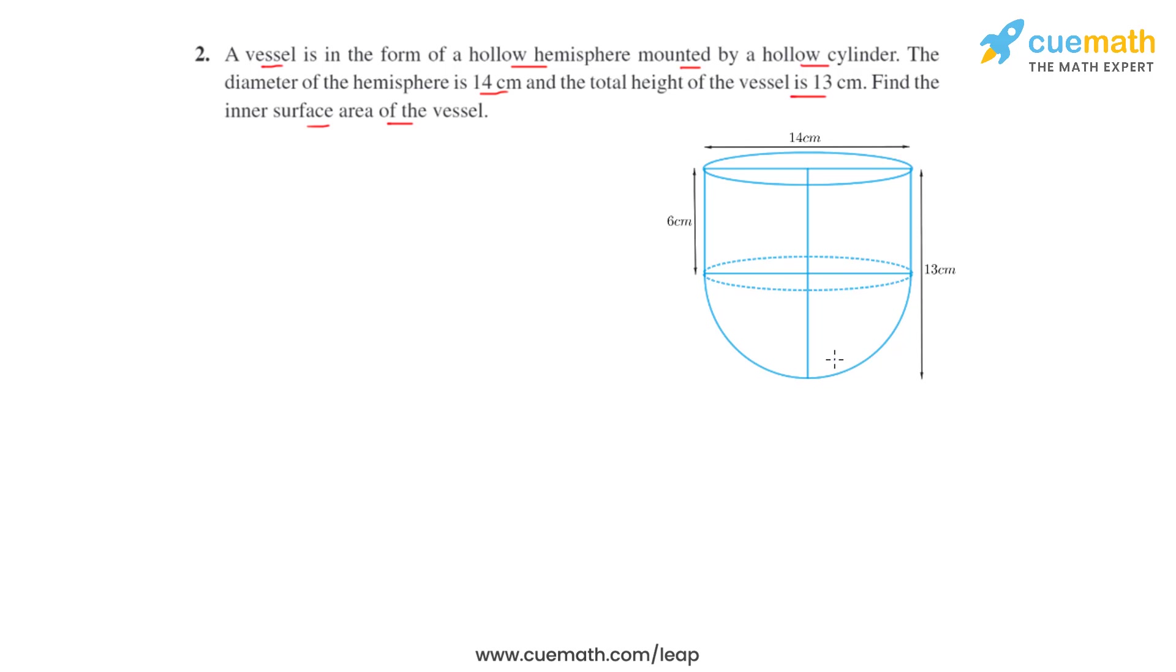As given in the question, we know that the diameter of the hemisphere is 14 centimeters. Now we know that diameter is double the radius, so we can calculate that the radius of the hemisphere will be half of 14 centimeters, which is 7 centimeters. This will also be the radius for the cylinder as it's mounted on the hemisphere.